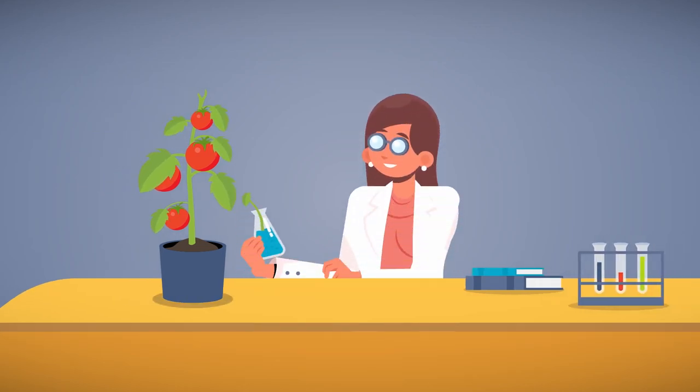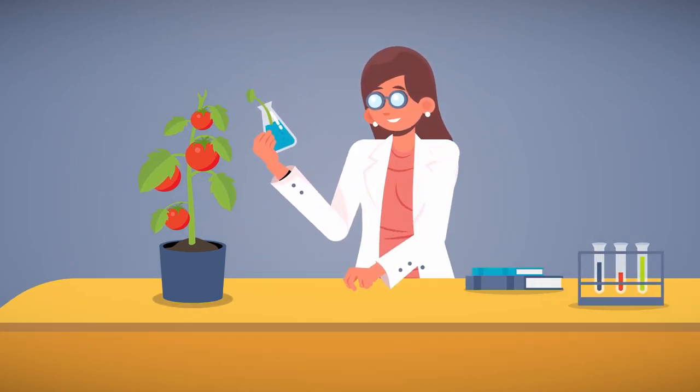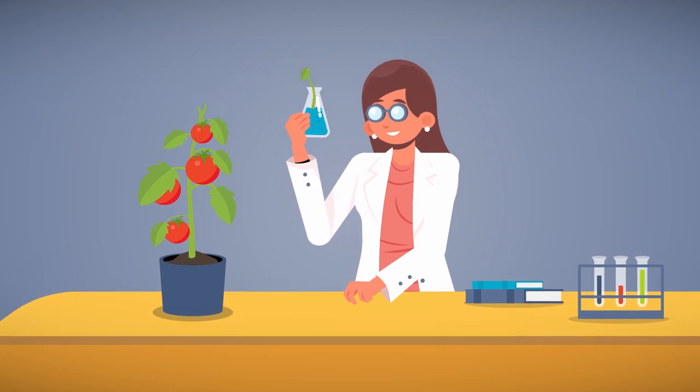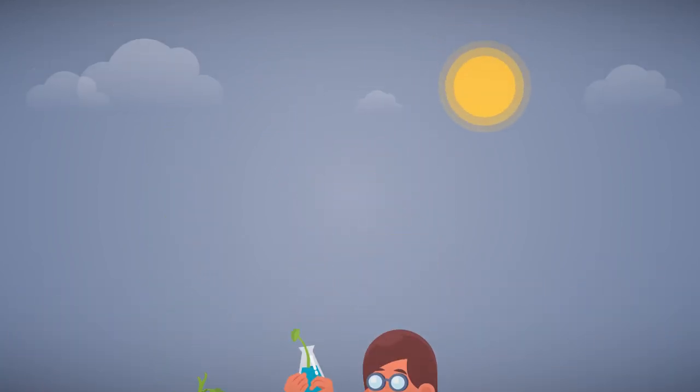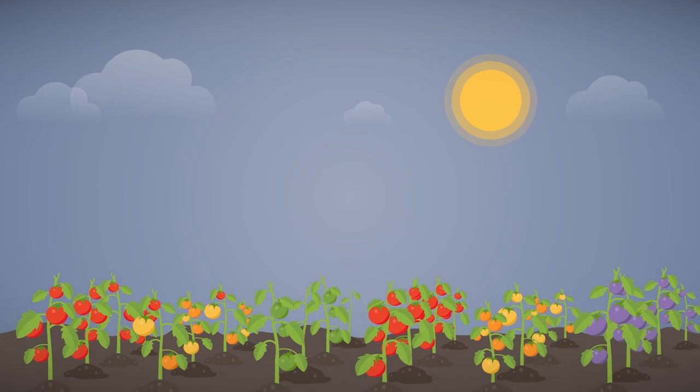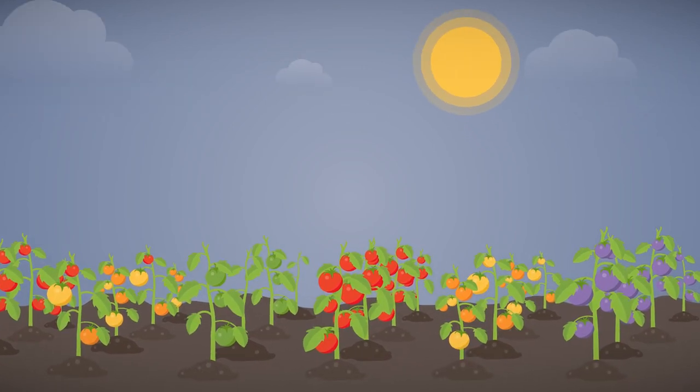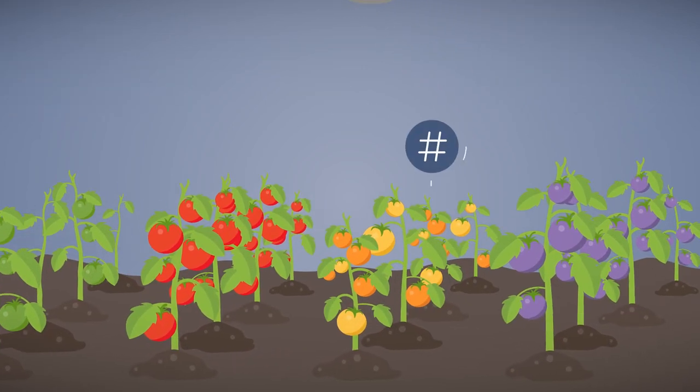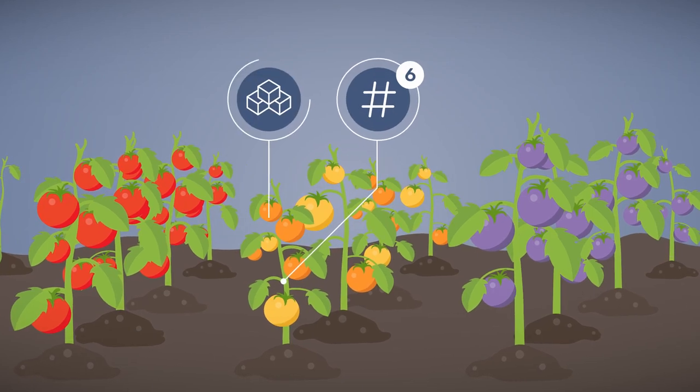Meet Jill, a dedicated plant breeder. She's planting different tomato variants in order to find the race which produces the most and the sweetest tomatoes. Therefore, she plants 1000 tomatoes of each variant and starts measuring the amount of fruits and their respective sugar content.